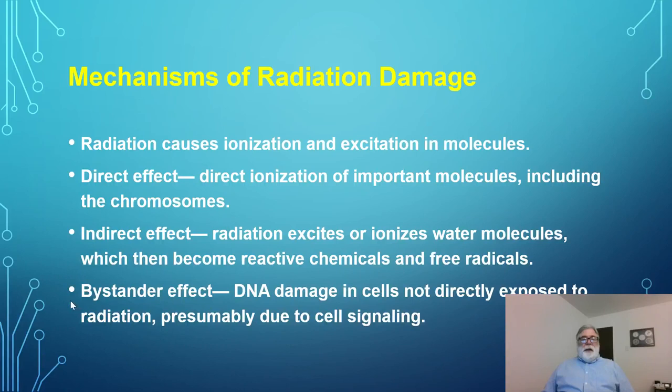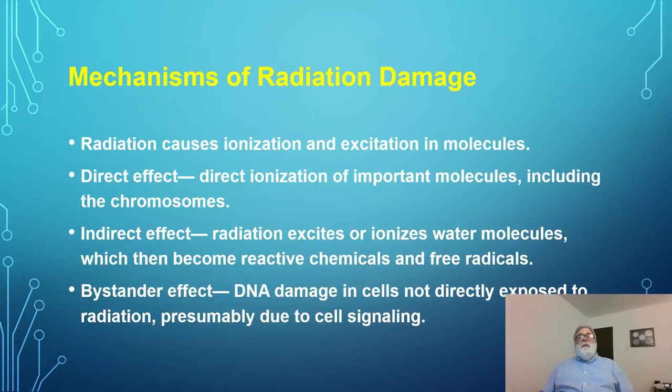There is a bystander effect that's been observed. DNA damage has been observed in cells that have not been exposed to radiation, but were adjacent to cells that were exposed. In fact, researchers have exposed cells to radiation, placed them with unexposed cells, and found that the unexposed cells then showed DNA damage. This is presumably due to signaling between the cells, but the phenomenon is well established — radiation damage can occur even in cells that have not themselves been subjected to ionization.